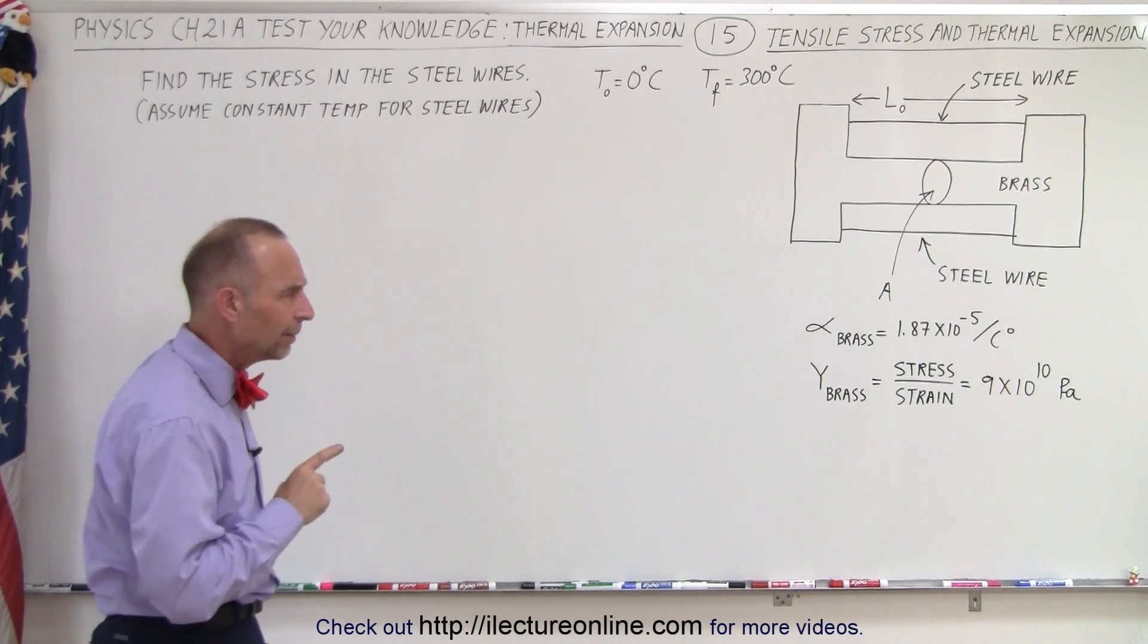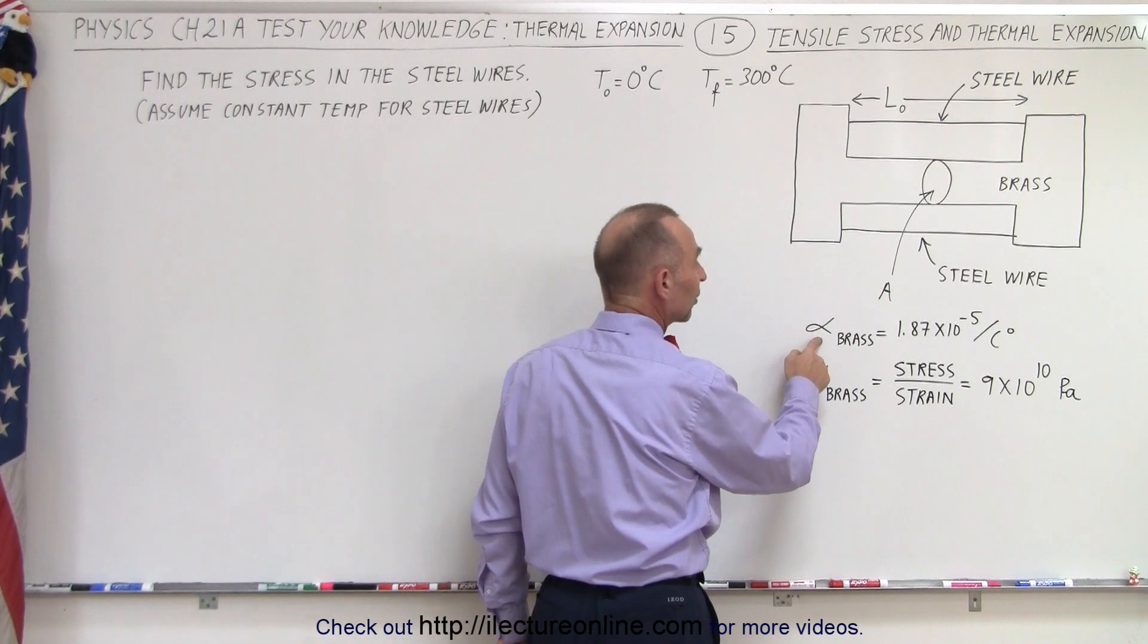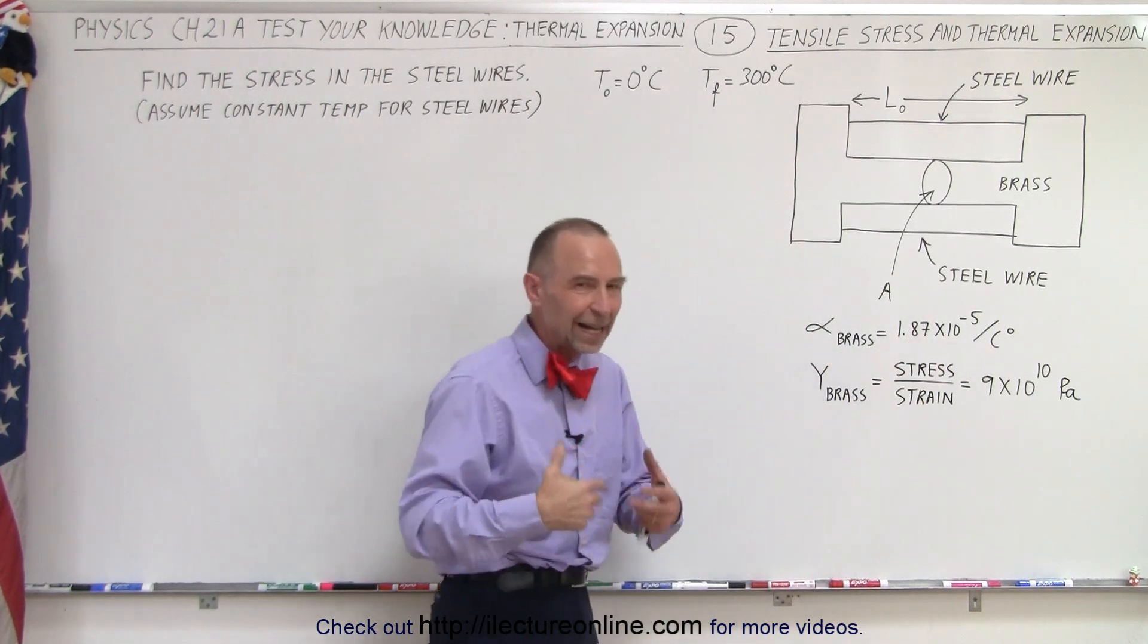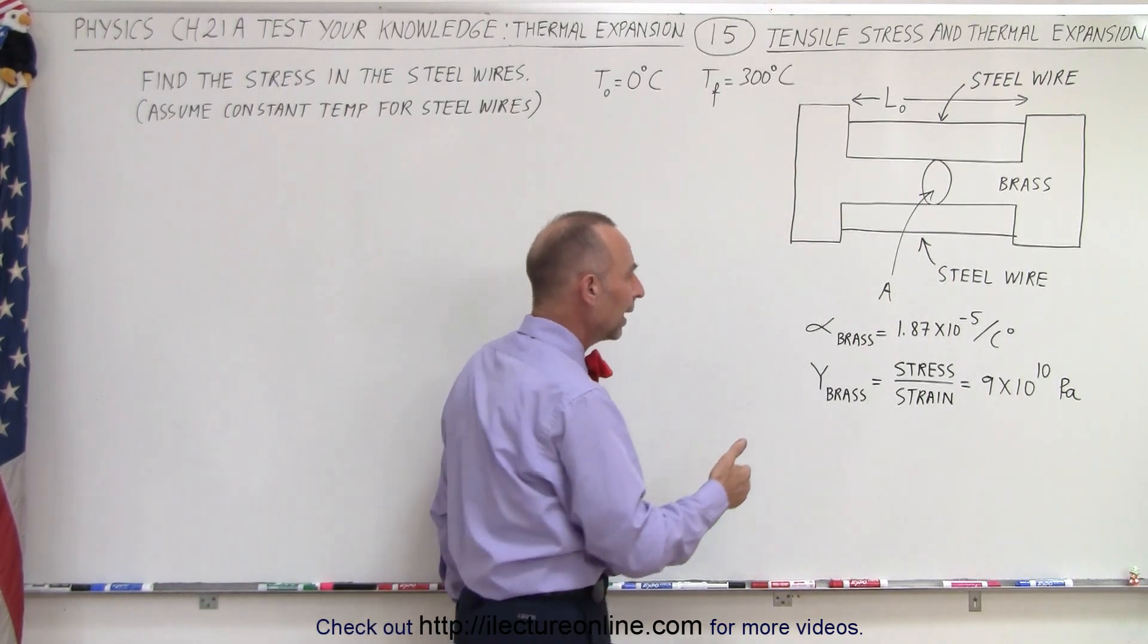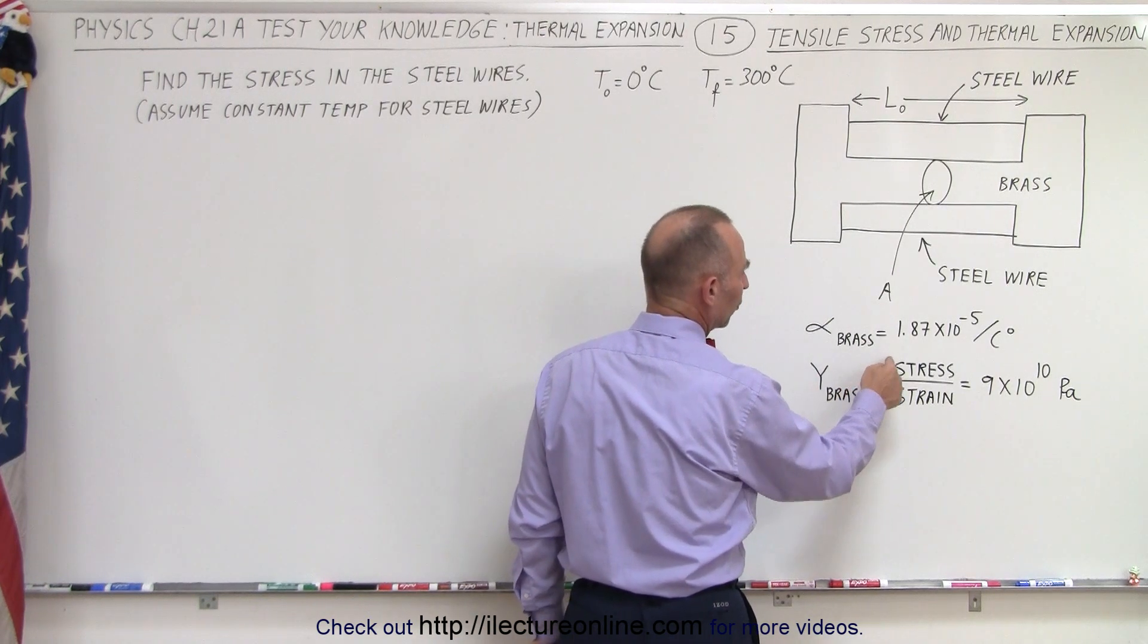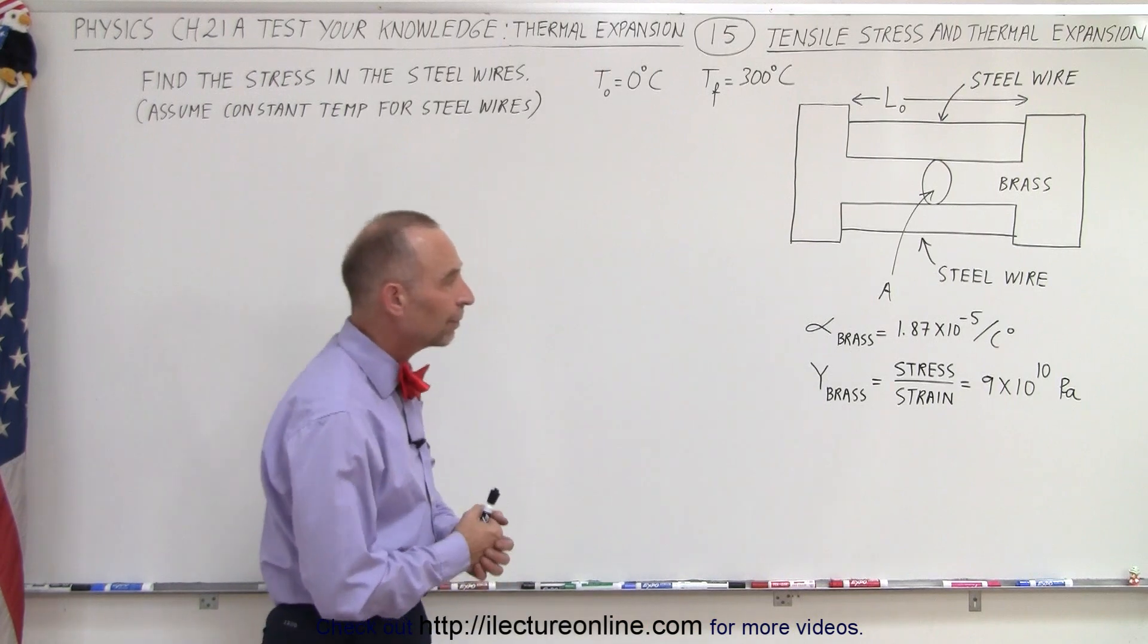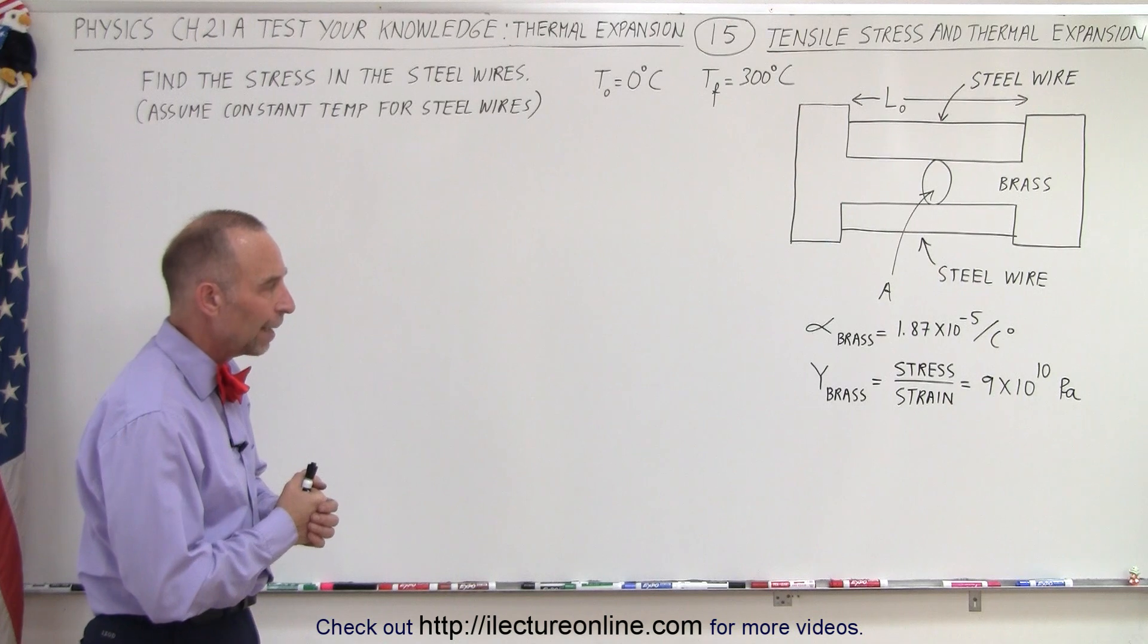Okay, so knowing that and then also knowing that the coefficient of linear heat expansion for brass is 1.87 times 10 to the minus 5, there's different kinds of brass of course, there's different numbers, we'll just pick that one, and that the Young's modulus for brass which is the ratio of the stress over the strain is about 9 times 10 to the 10 pascals. Pascals is a newton per square meter. So let's try to find that.